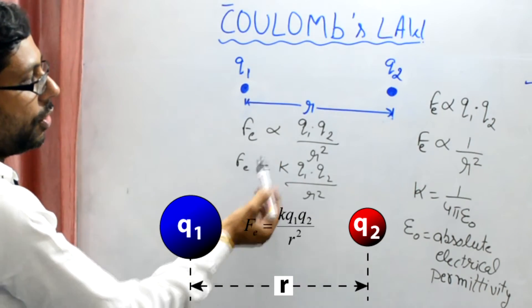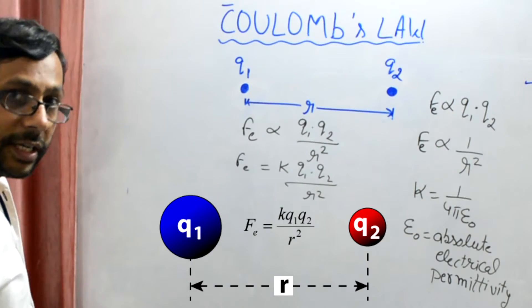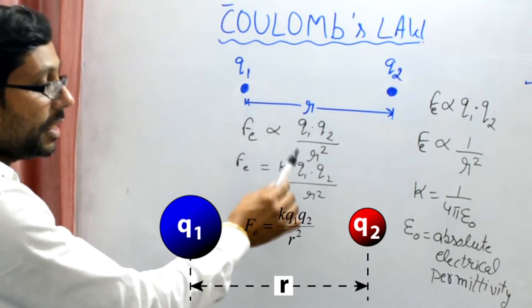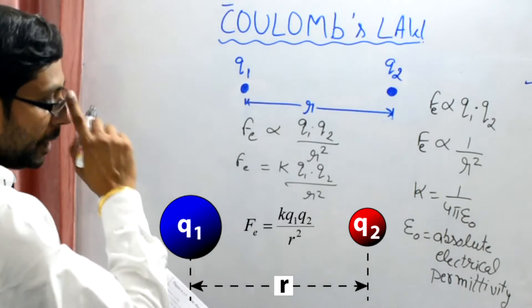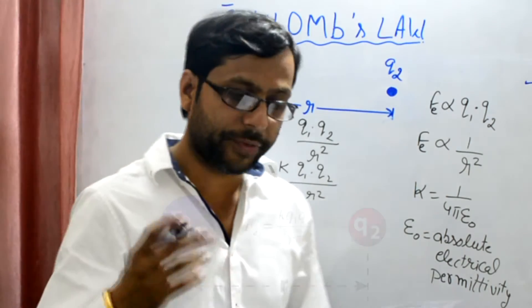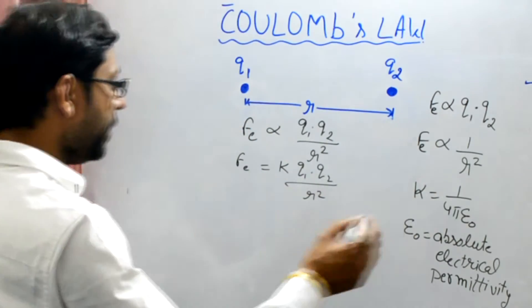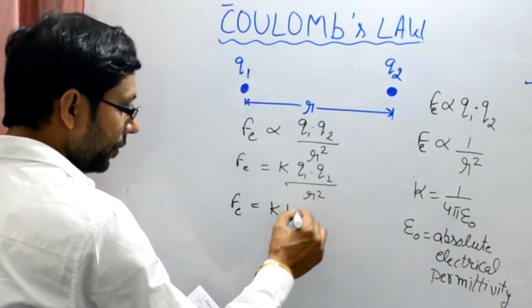So, electrostatic force depends on the product of two charges Q1 and Q2, and the square of the distance, but that should be in the denominator - that is inversely related to the charges. And one more thing, as the force is a kind of vector quantity, we can represent it in this manner. Look at this whiteboard carefully.